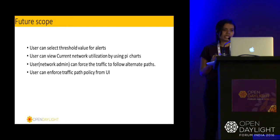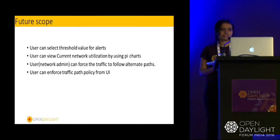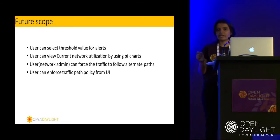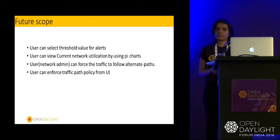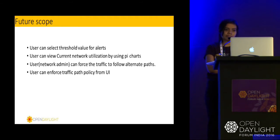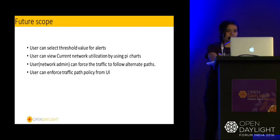This is all about the use case for the alert mechanism, but we can add extra features. The future scope for this alert mechanism: currently I'm considering hard-coded values for alerts, but from the UI itself the user can provide a threshold value — for example, if jitter exceeds 10 seconds, it should show an alert. We can also show pie charts which display network utilization, considering parameters like congestion and bandwidth.